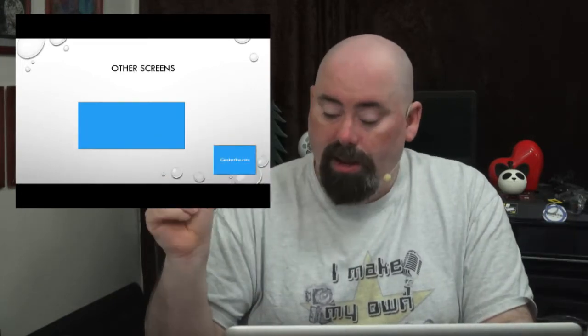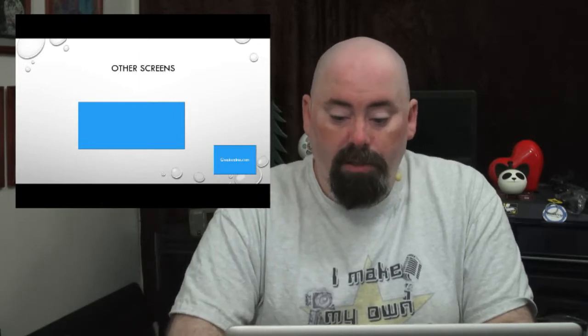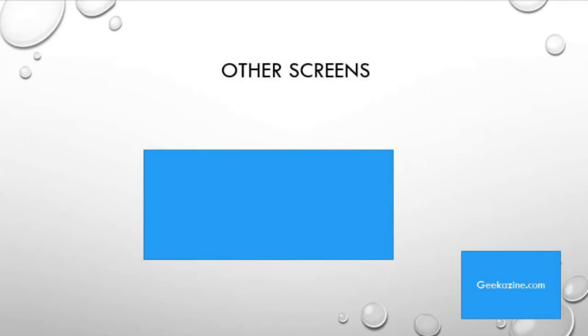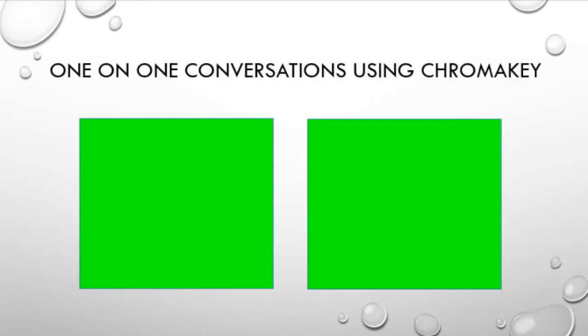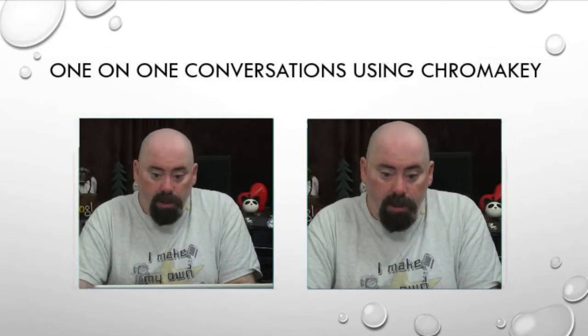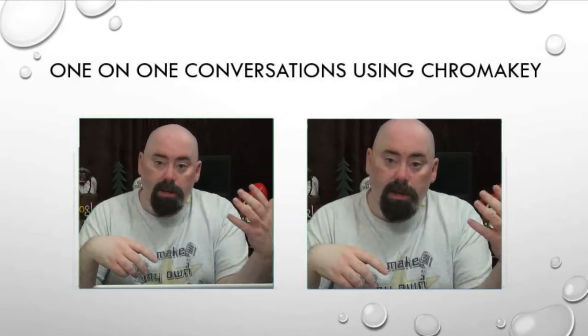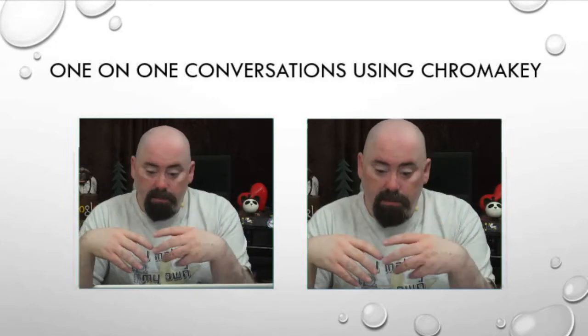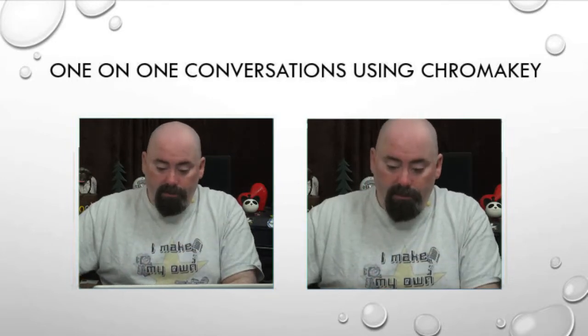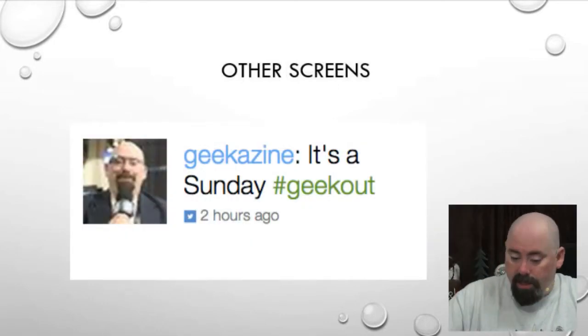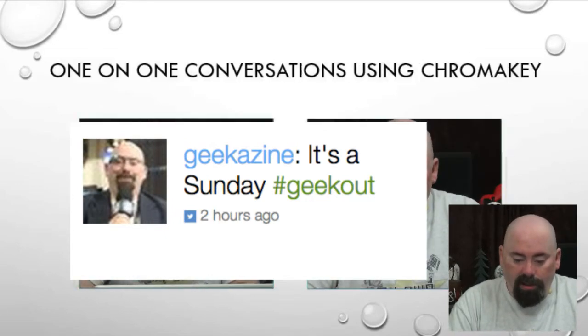You can create additional boxes and bring them up as needed — here's my main video, here's my presentation, and I can bring up other boxes. Here's another cool way to handle webinars: one-on-one conversations using chroma key. If I switch to the scene I created, you suddenly see two videos — one is me, one could be a Skype caller. You can go back and forth between scenes, showing tweets and then returning to the conversation.